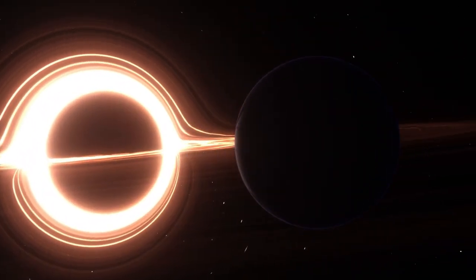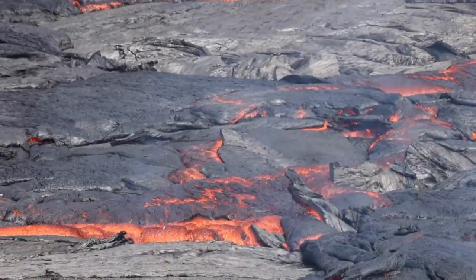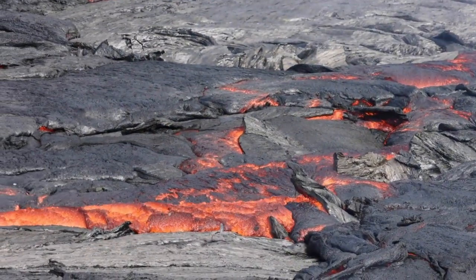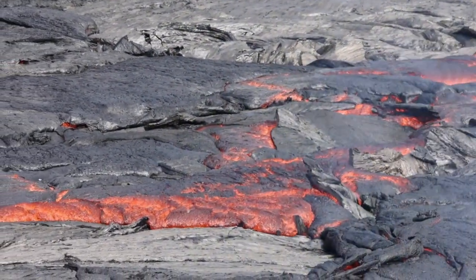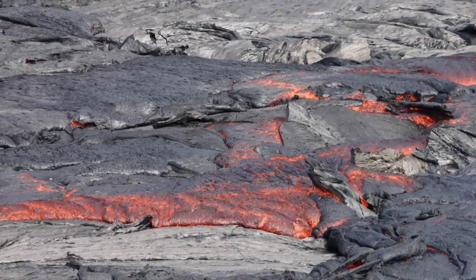The planet's orbit only adds to its torture. Kepler-70b completes a full orbit around its star in just 5.6 hours. That's faster than most people finish a day's work. It's 65 times closer to its star than Mercury is to our sun.